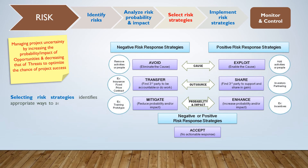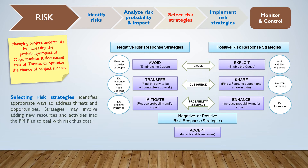Selecting risk strategies identifies appropriate ways to address threats and opportunities. Strategies may involve adding new resources and activities into the project management plan to deal with risk, thus costing money or impacting the schedule. Contingency plans may also be created in case certain risk events occur.